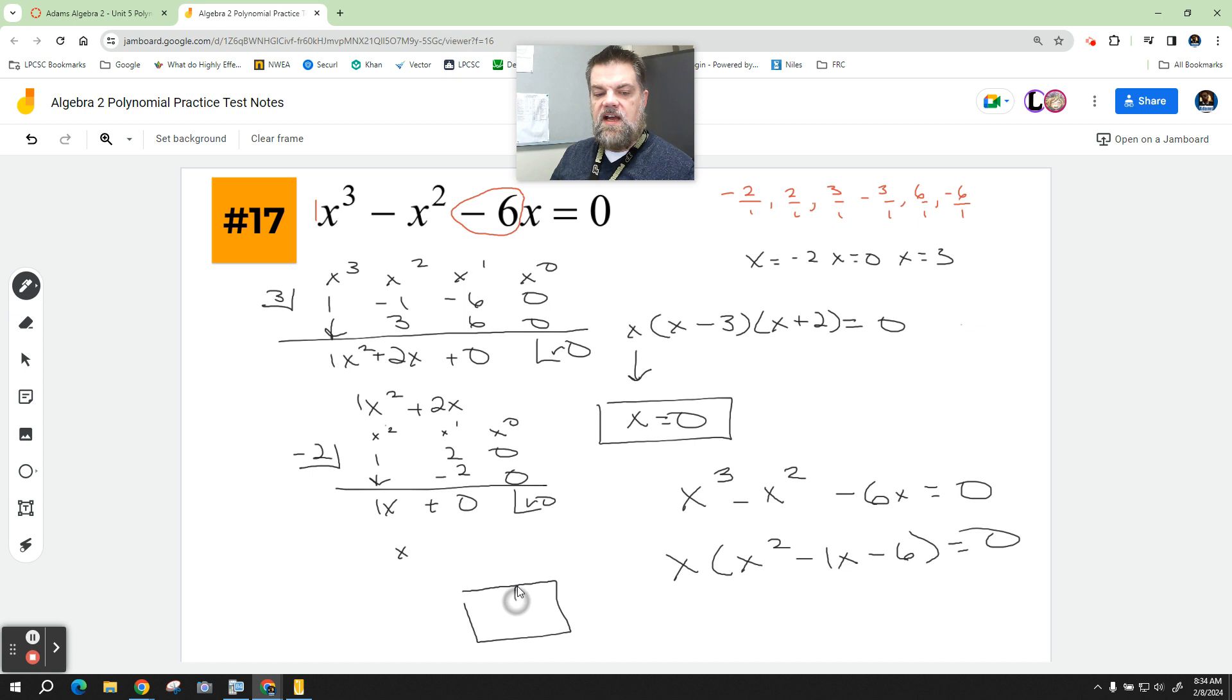If I do the math on that and I say this is x squared and this is negative 6, then I get x times x. It has to add up to negative 1. In other words, this would be 2x and this would be negative 3x. So then this becomes x times x minus 3 times x plus 2. So sometimes the factoring is easier on these short polynomials. All right, that's it.